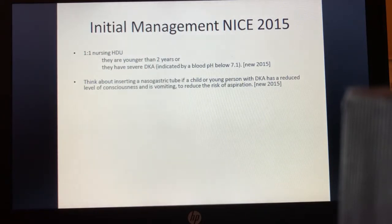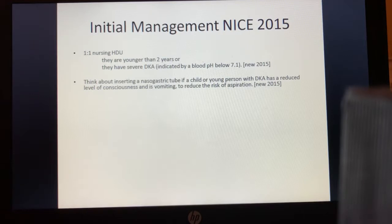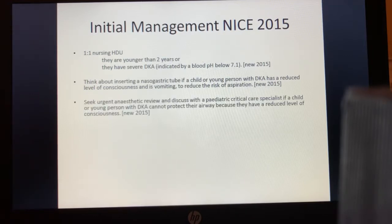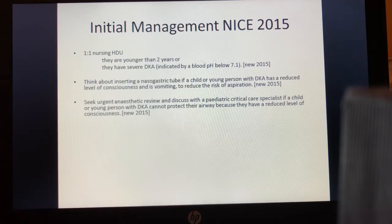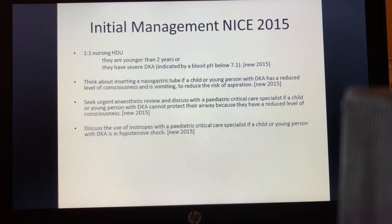Aspiration pneumonia is a recognised cause of mortality in DKA, so a nasogastric tube should be considered if there's reduced consciousness and vomiting. Urgent anaesthetic review and early discussion with paediatric intensive care retrieval services should be instigated if there's reduced consciousness. Inotropic support in conjunction with PICU discussion should be considered for hypotensive shock.